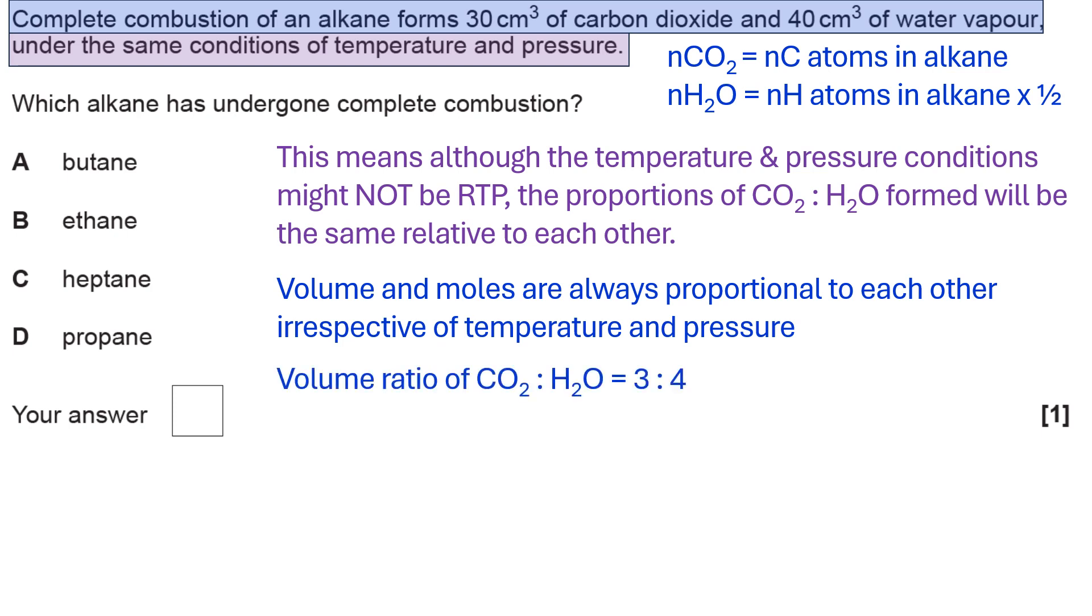So looking at the volume ratio of CO2 to H2O, it's 30 to 40, which is obviously 3 to 4. The ratio of carbon atoms to H2O is also 3 to 4, but the ratio of carbon atoms to hydrogen atoms must be 3 to 8.